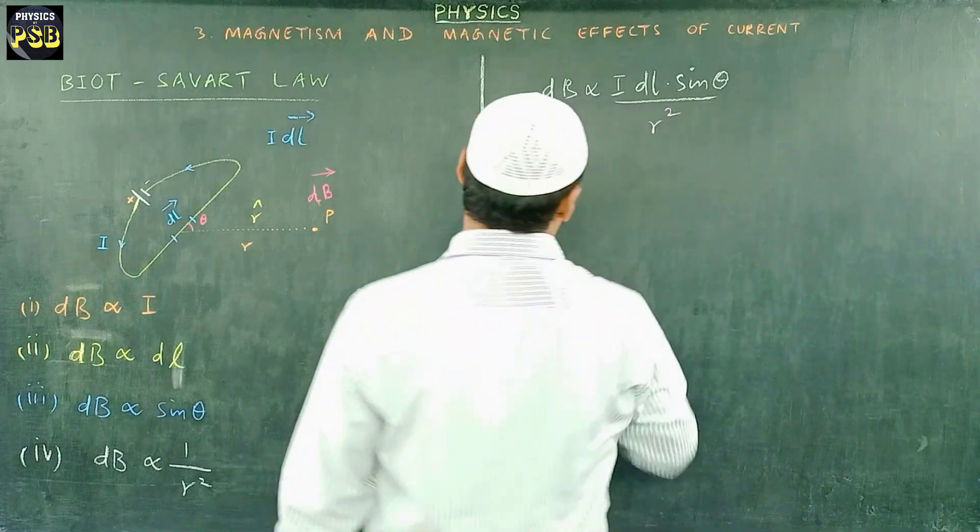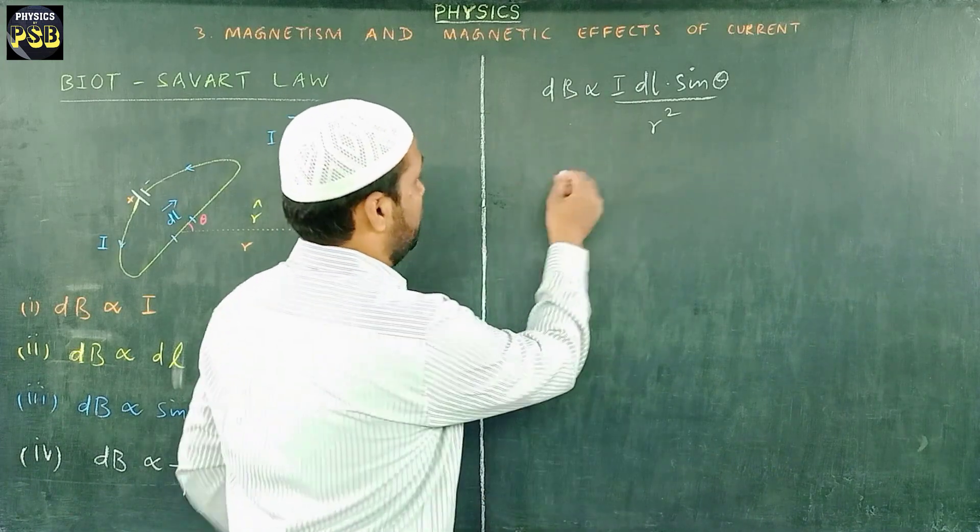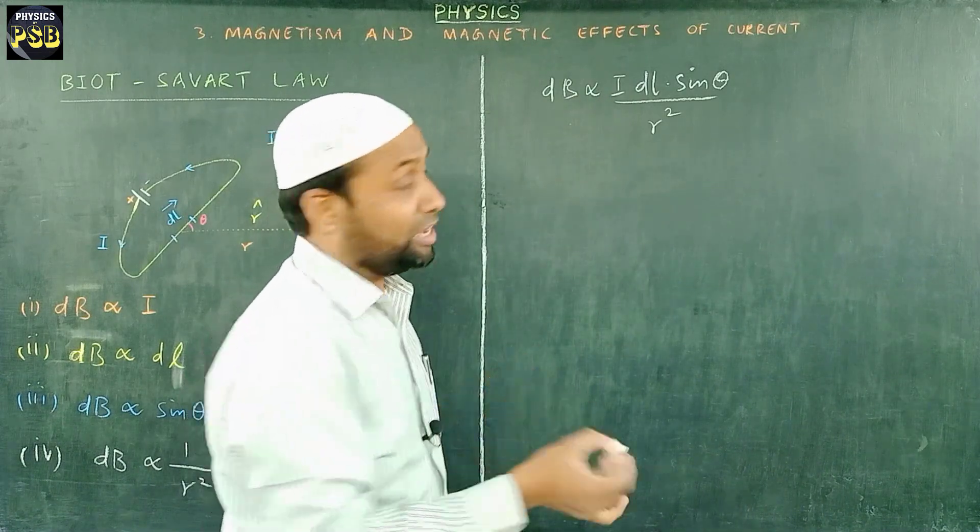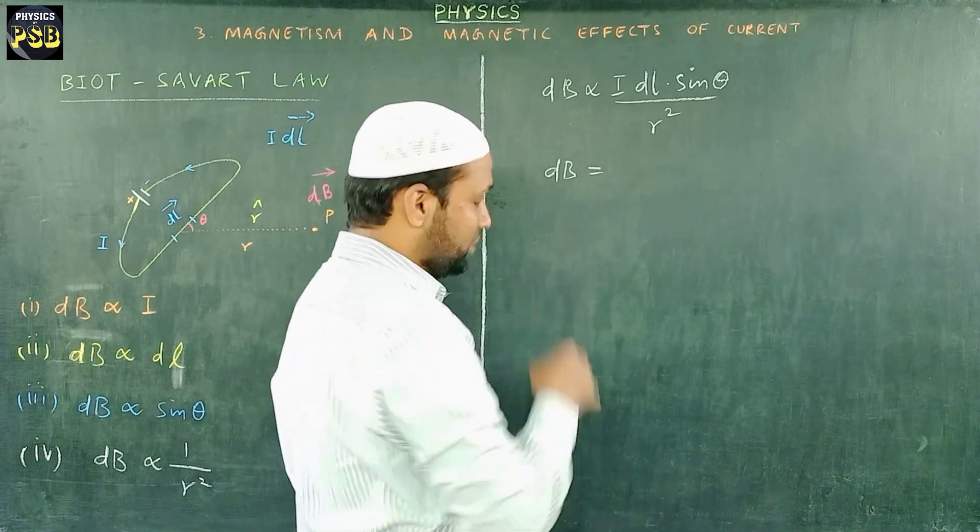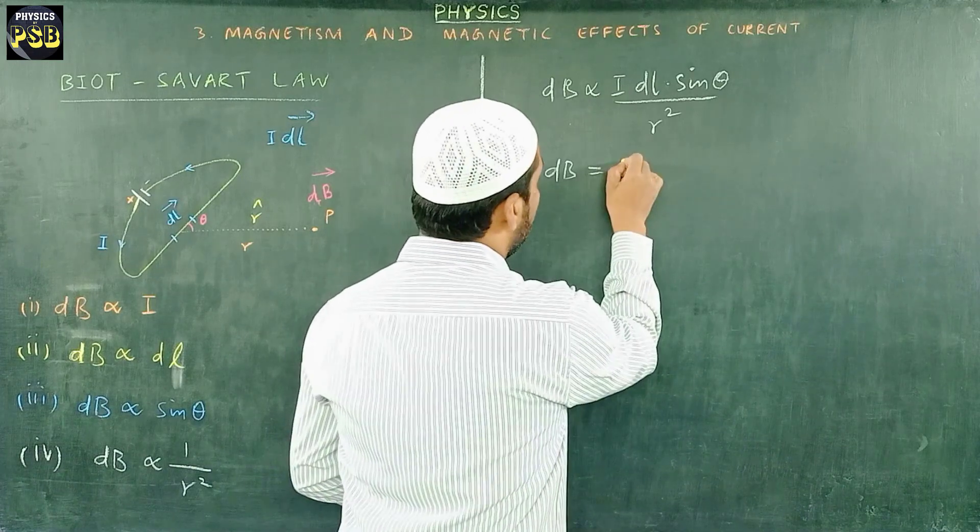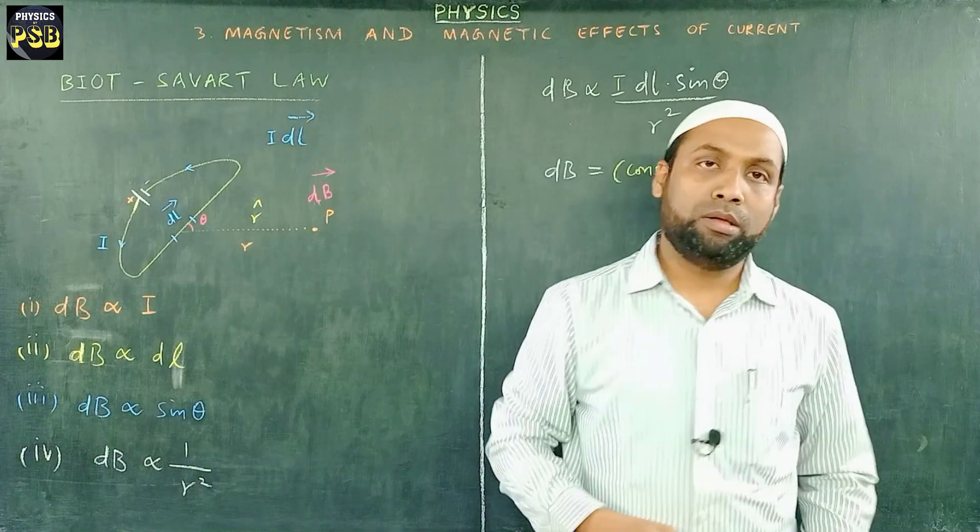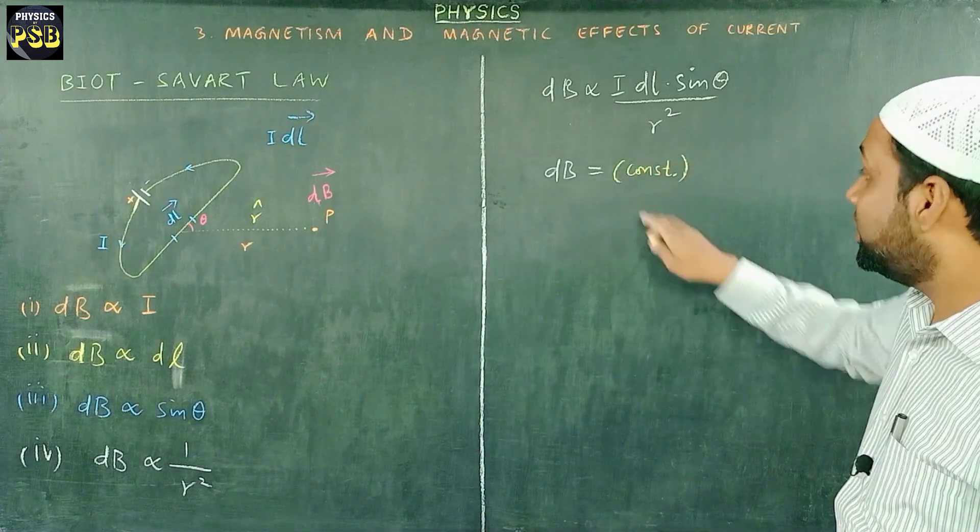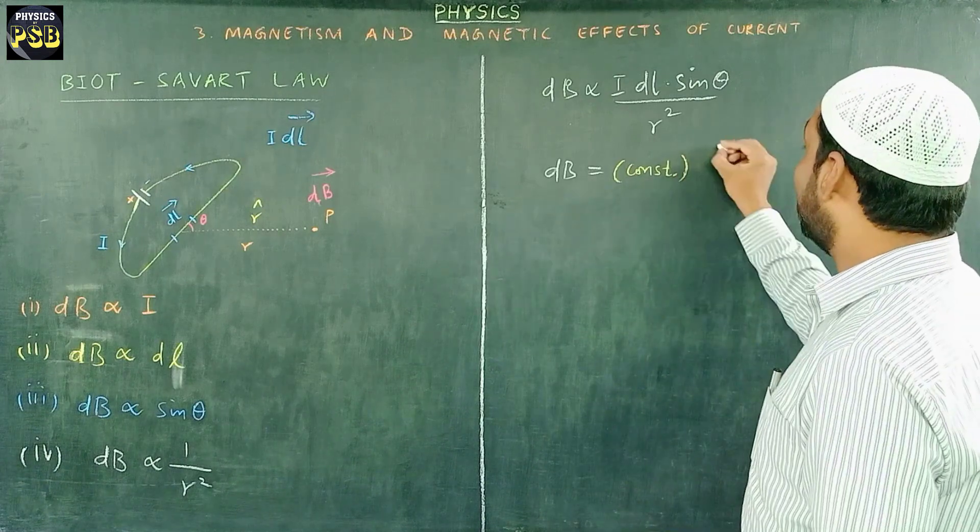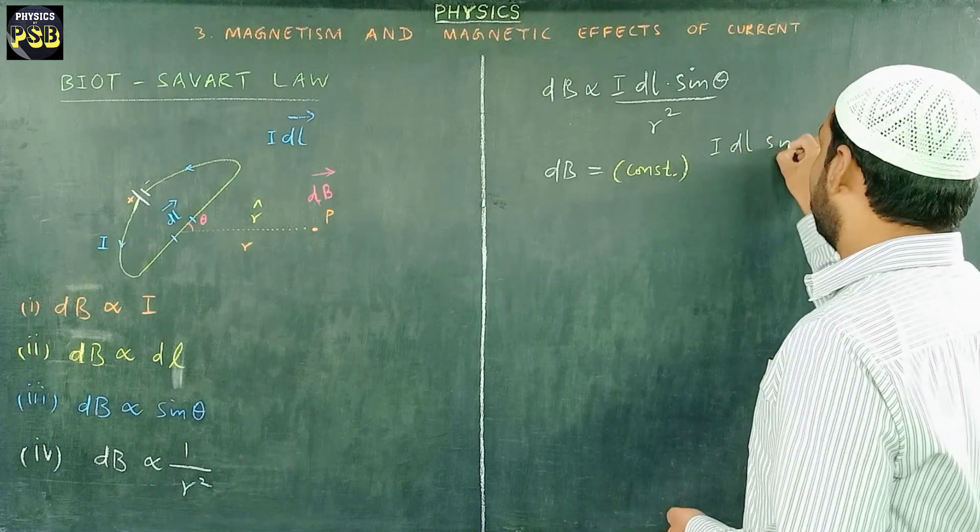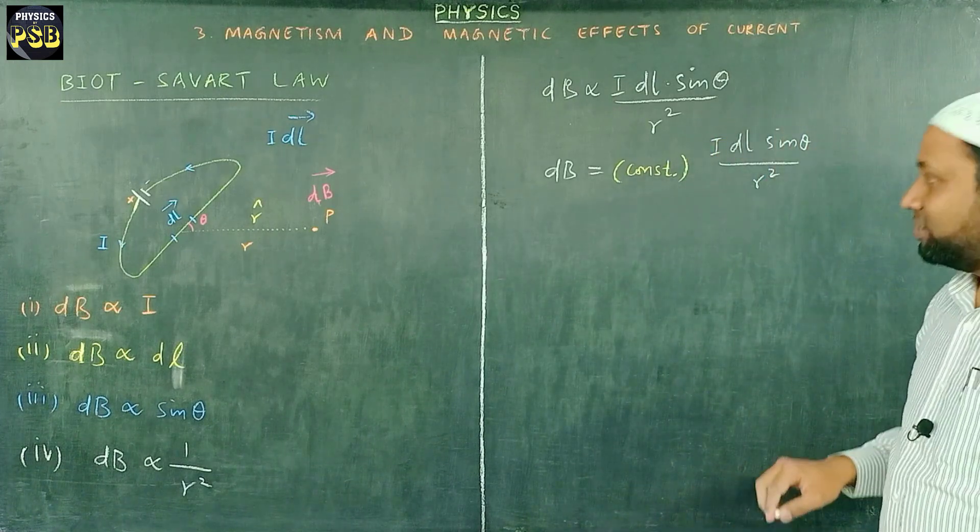When you remove proportionality we need to include a constant along with equal to sign. So dB equals constant times I dl sine theta upon r square.